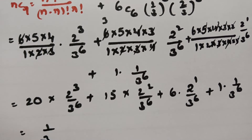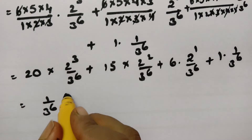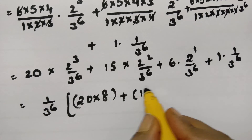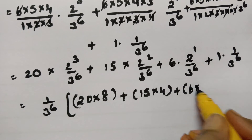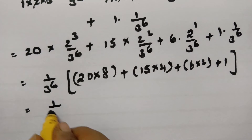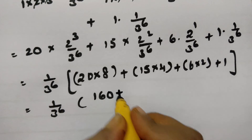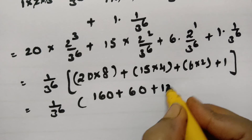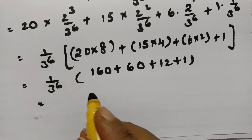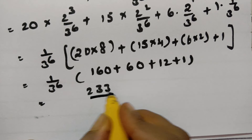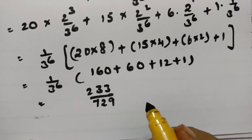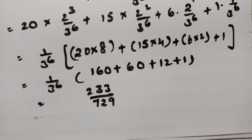Taking 1/3^6 common from all terms: (1/3^6) · [20·8 + 15·4 + 6·2 + 1] = (1/729) · [160 + 60 + 12 + 1] = (1/729) · 233 = 233/729. This is the probability of getting at least 3 dice showing 5 or 6.